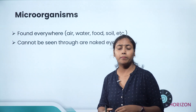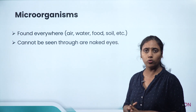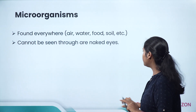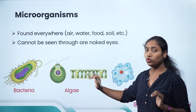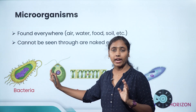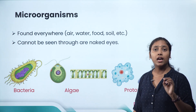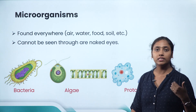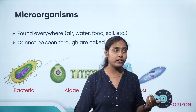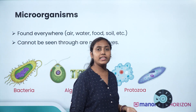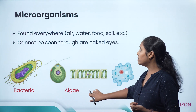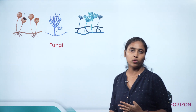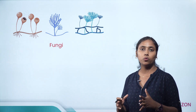Microorganisms can be categorized into four different groups. The first is bacteria — unicellular microorganisms made up of only one type of cell. The second is algae, which can be unicellular or multicellular. The third is protozoa, which are unicellular. The fourth group is fungi. These are the four groups: bacteria, algae, protozoa, and fungi.